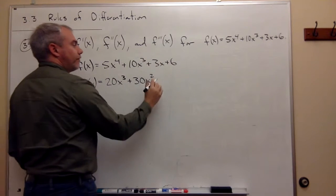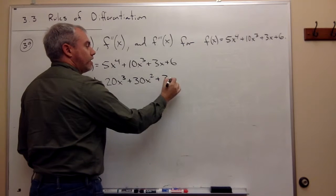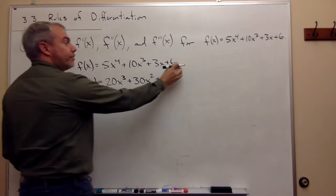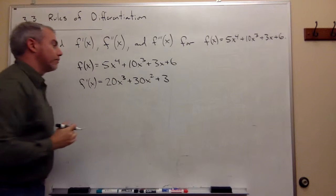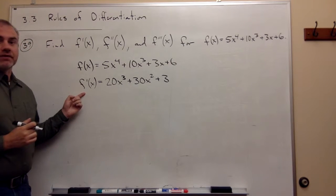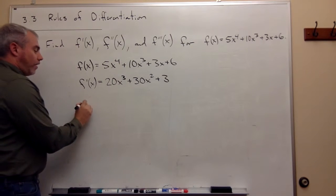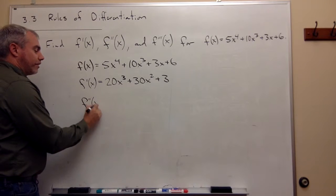The derivative of 3x is plus 3x to the zeroeth, which is 1, and the derivative of constant is 0. So I have the first derivative. The derivative of the derivative is the second derivative.